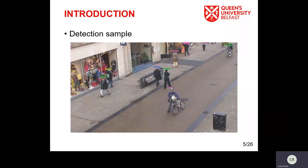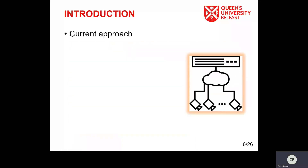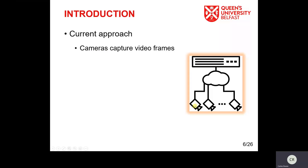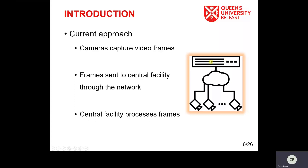For instance, we are showing here a sample detection in a video frame. We see here different people, and each person detected has a bounding box around them. The current approach is that cameras capture video frames such as the one we have seen, then those video frames are sent through the network to a central facility — it could be a server, it could be a cloud — but it's a centralized facility, and here is where the frames are processed.